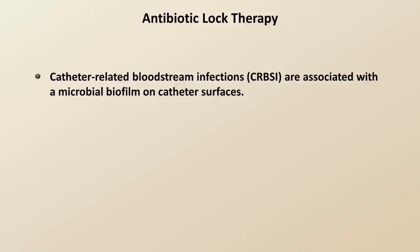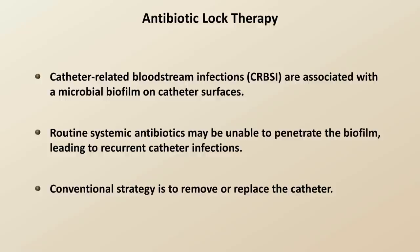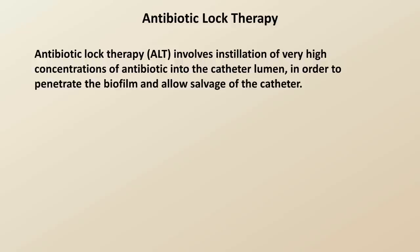The final topic in this course is antibiotic lock therapy. Catheter-related bloodstream infections are very common and difficult to treat because they are associated with a microbial biofilm on the catheter surface. Routine systemic antibiotics may be unable to penetrate the biofilm, leading to recurrent catheter infections. Therefore, the conventional strategy is simply to remove or replace the catheter. Unfortunately, in some circumstances the patient may have severe IV access problems, and the catheter may be a long-term line such as a tunneled catheter or a port, which both patient and physician may be very reluctant to remove. Antibiotic lock therapy involves instillation of very high concentrations of antibiotic into the catheter lumen in order to penetrate the biofilm and allow salvage of the catheter.